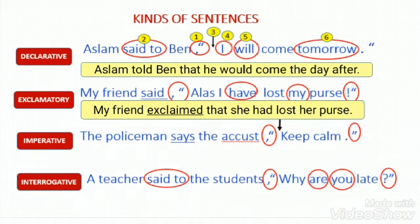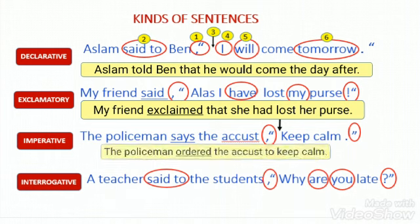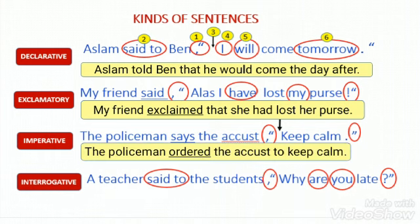Imperative sentence — Direct speech: 'The policeman says to the accused, keep calm.' As this is an imperative sentence, we use 'ordered' (since it is a command from the policeman). We change 'says to' into 'ordered.' We use the conjunction 'to' as it is a positive sentence. Result: 'The policeman ordered the accused to keep calm.'